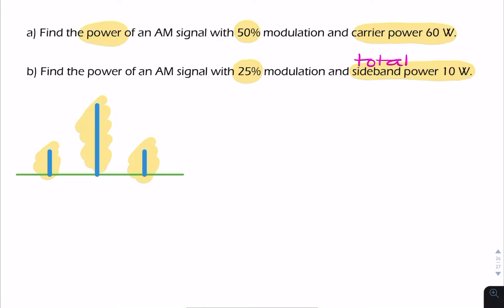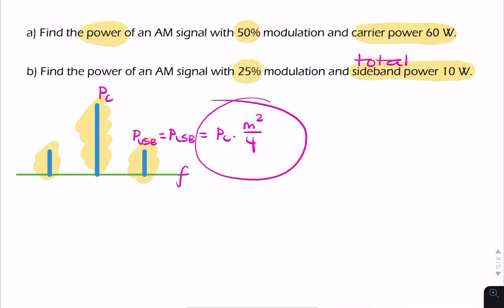That relationship is related to the modulation index. For a carrier of power PC, the power in either sideband — the power in the upper sideband — is equal to the power in the lower sideband, and that equals PC times m squared over 4. If that expression is unfamiliar to you, or you're not sure where it came from, I'll show you how to derive it in a moment.